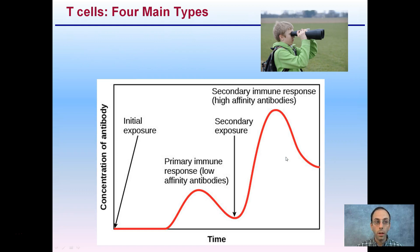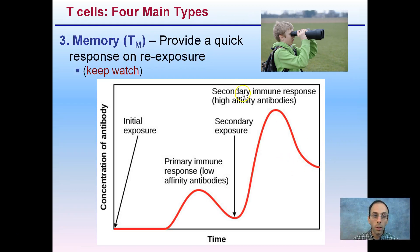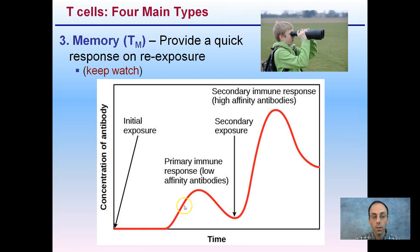The third type is the memory T-cells, which provide a quick response on re-exposure. Initially, with our first exposure and no memory T-cells, we have a primary immune response with low affinity for antibodies. But upon second exposure, the concentration of antibodies rises much higher and much more quickly.